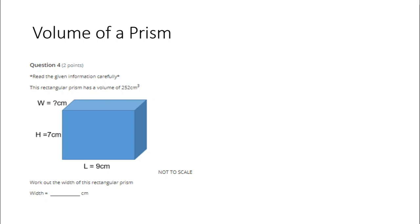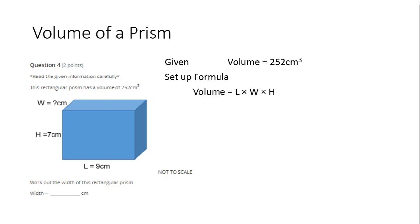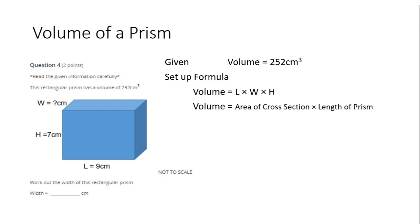Question 4 — we're working out the width of this prism, given that the volume is 252 centimeters cubed. If you're given a value in the question, you should set out the formula that you would generally use to calculate that value. A lot of you use the formula length times width times height for the volume of a cuboid or rectangular prism. But I like you to also recognize that it's the same thing as the area of the cross-section multiplied by the length of the prism, because this second formula will work for any type of prism.